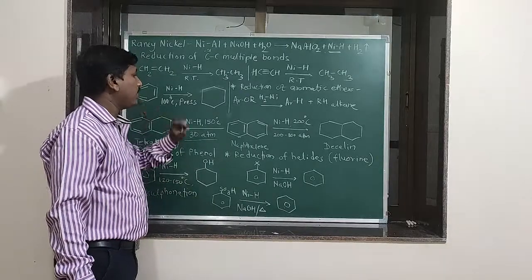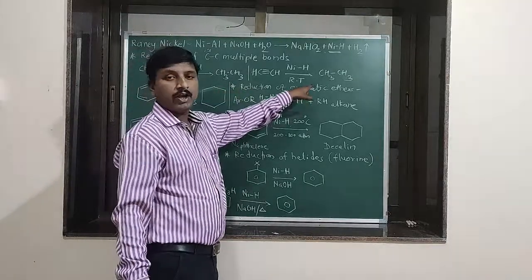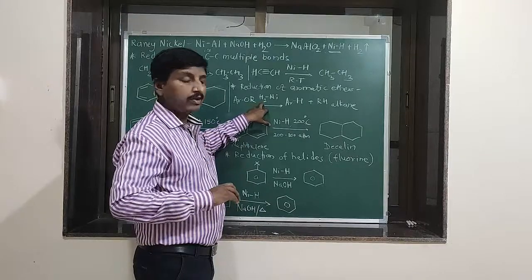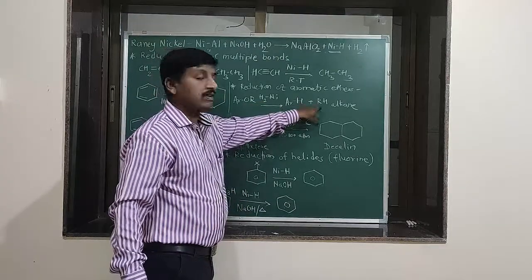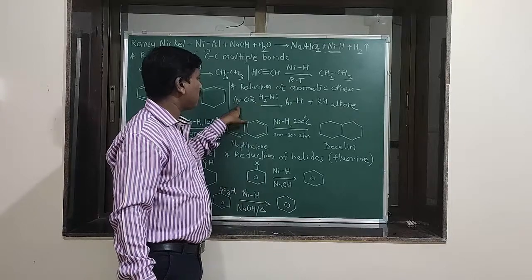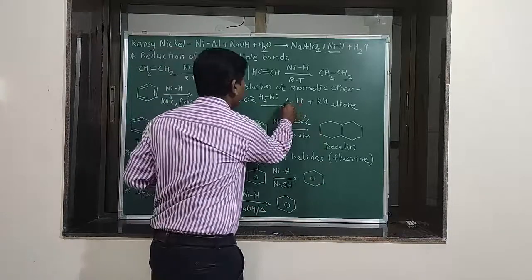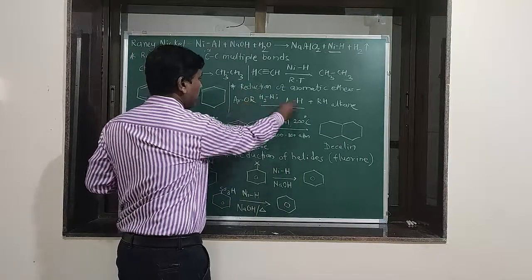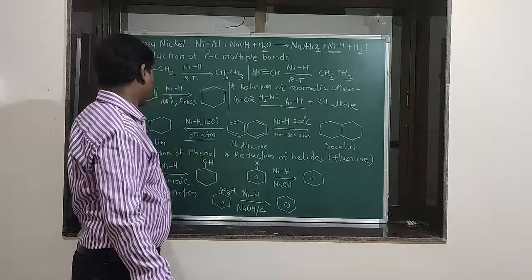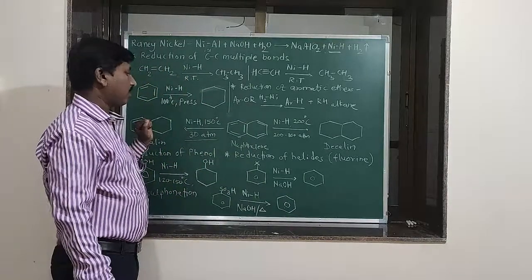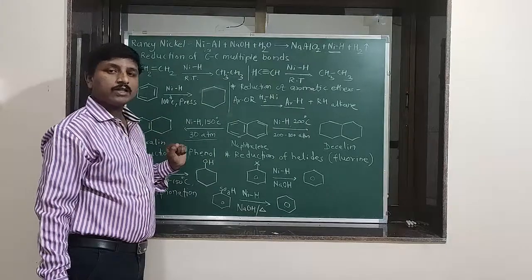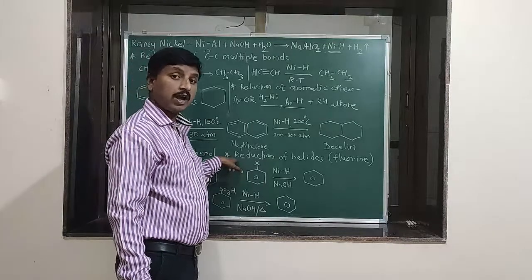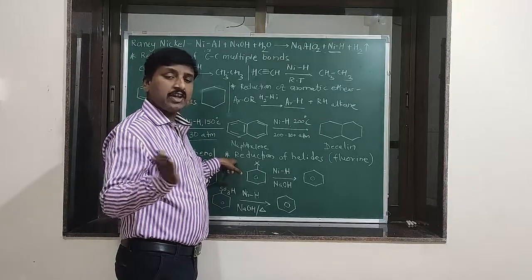The next application is the reduction of aromatic ethers. Aromatic ethers, using Raney Nickel, can be converted into the corresponding aromatic compound as well as alkane. A cleavage occurs at the C-O bond position and we get the corresponding alkane. This is the reduction of aromatic ethers by Raney Nickel.